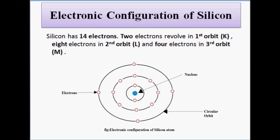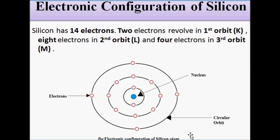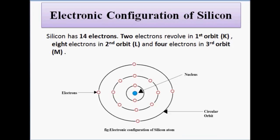The outermost M orbit is the valence orbit, and it has four electrons. This is the electronic configuration of silicon. In the diagram, the positively charged central part is the nucleus, the circular pathways are the orbits, and the red circles are the revolving electrons — two in the first orbit, eight in the second, and four in the third.